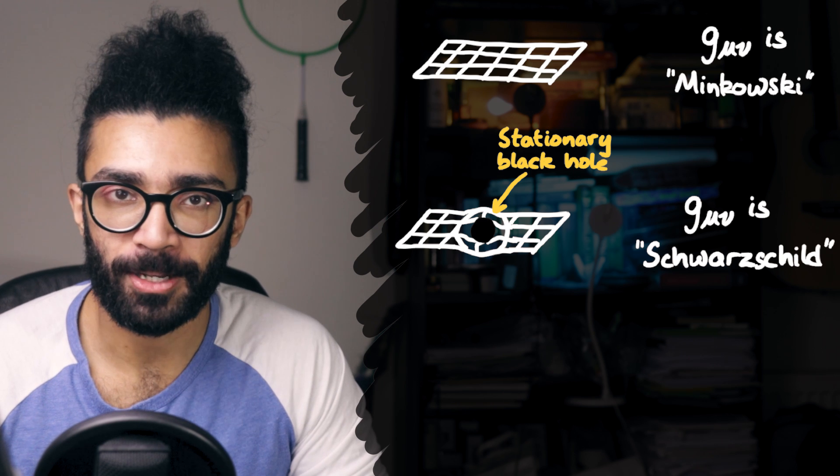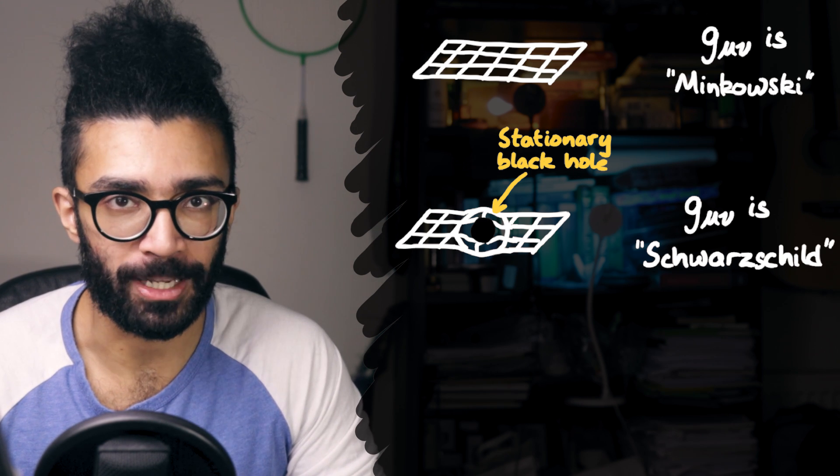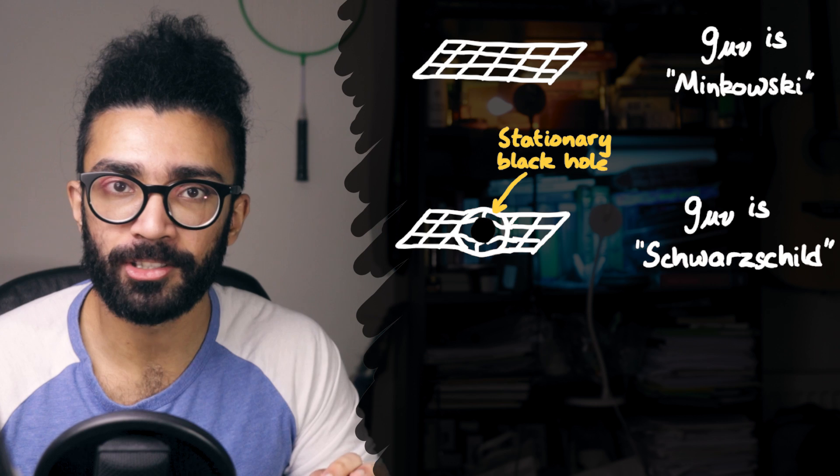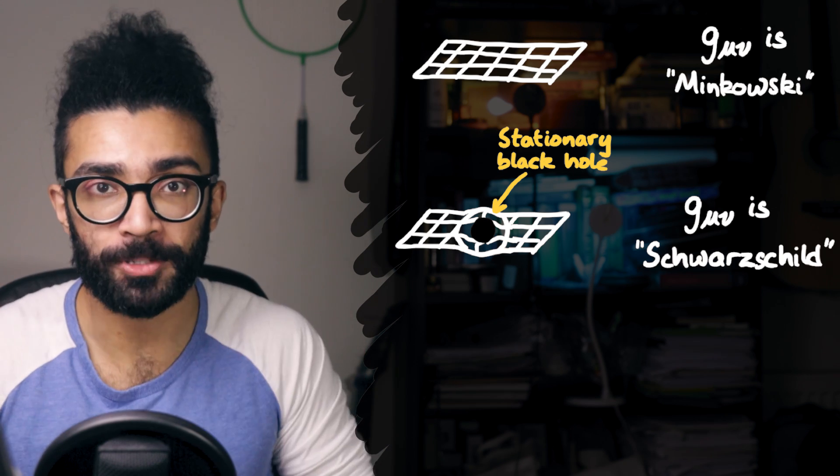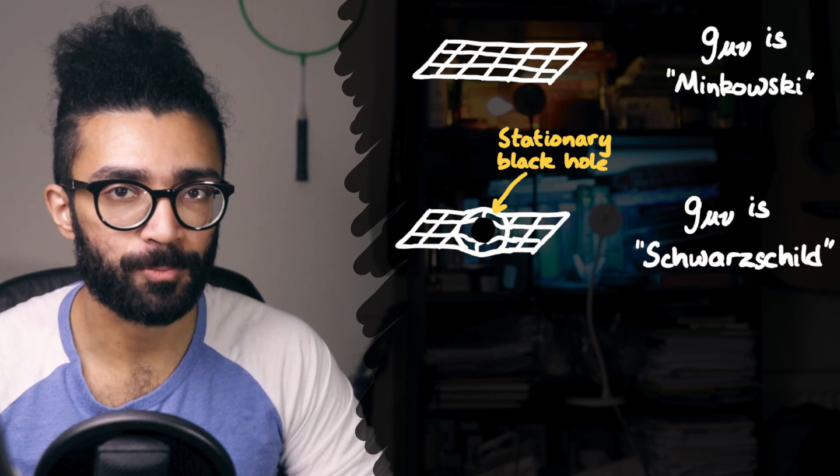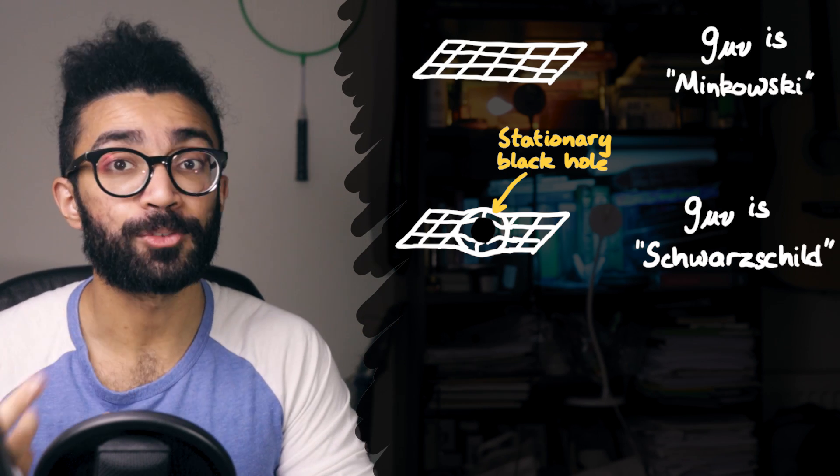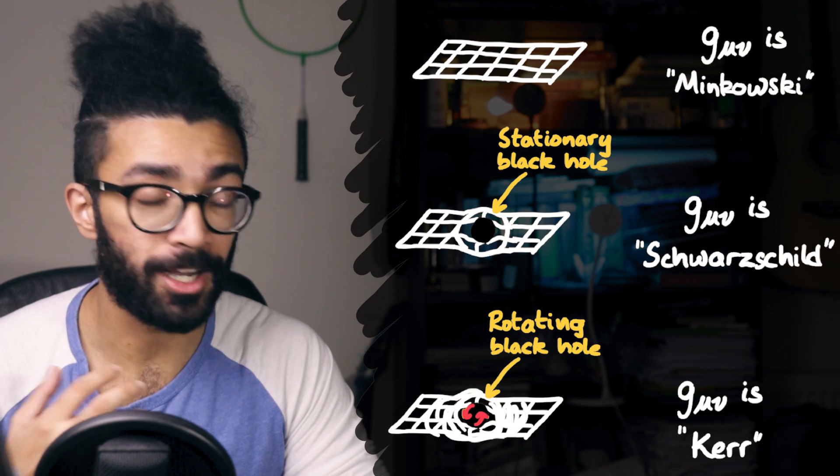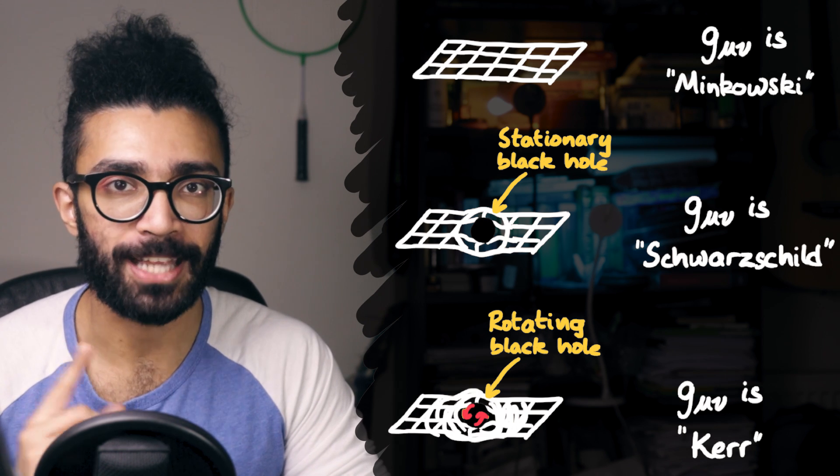Another solution to these Einstein field equations is given by the Schwarzschild metric, which describes stationary black holes, and it describes how spacetime warps around these stationary black holes. I've actually made two videos on stationary black holes. Check out my black holes playlist, as well as one on the Kerr solution, or the Kerr metric, which talks about rotating black holes.